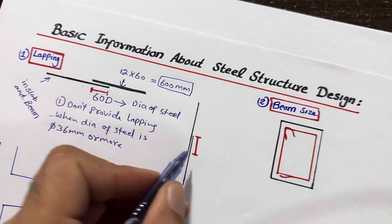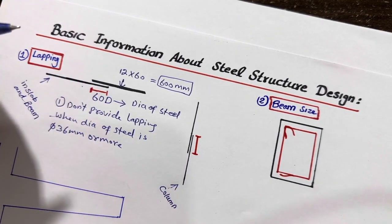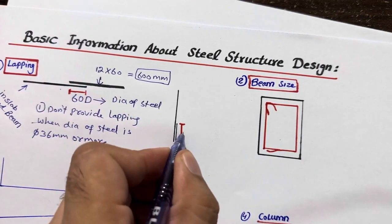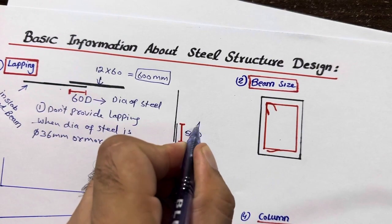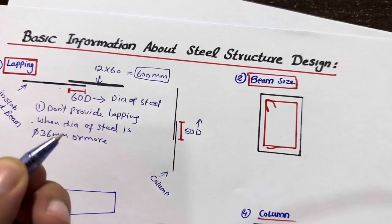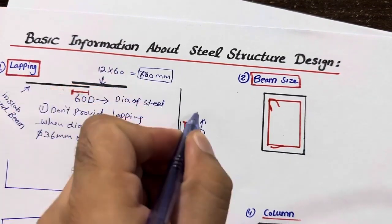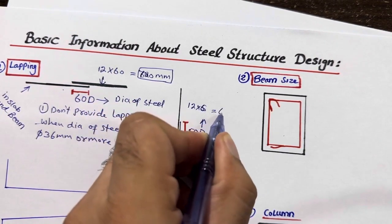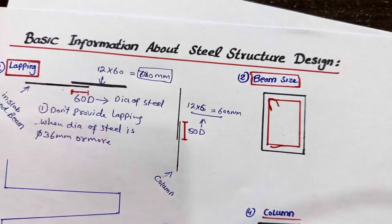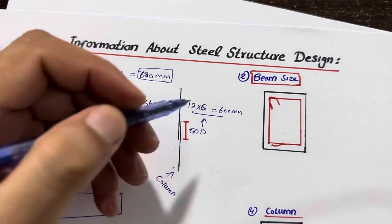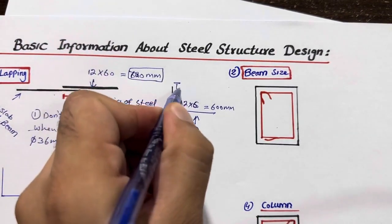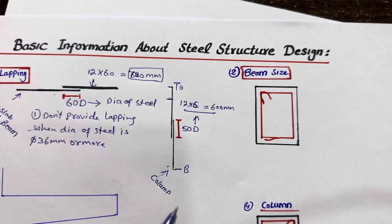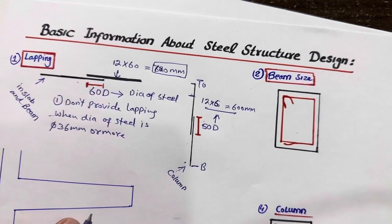For lapping inside a column, the lapping length should not be less than 50d, where d is the diameter of the steel rod. For example, 12mm × 50 = 600mm. Also, lapping is not allowed at the bottom or at a distance of H/2 from the bottom of the column. I will guide you on where to provide lapping in a future video, but this restriction is very important to remember.